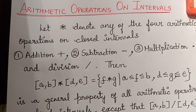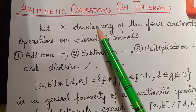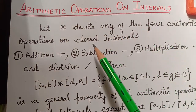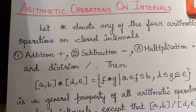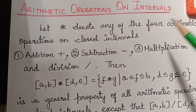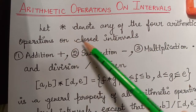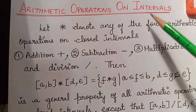Hello students. The next topic under the unit fuzzy numbers is arithmetic operations on intervals. We have to learn the arithmetic operations on fuzzy numbers, for which first we need to know the idea of arithmetic operations on intervals.